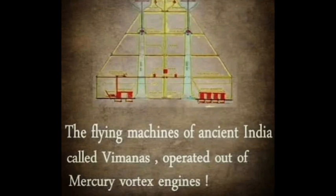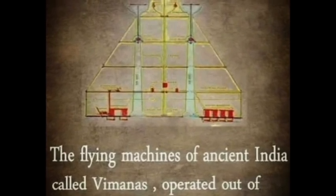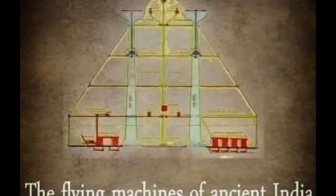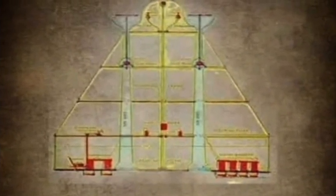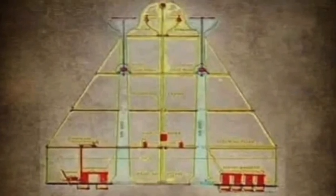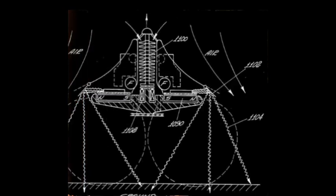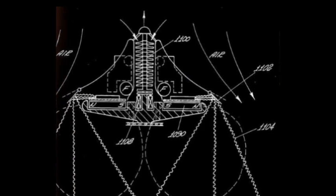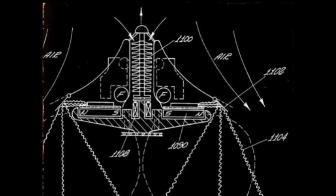Picture this: a world where gravity doesn't hold us back. Imagine floating effortlessly, defying the laws of nature. To understand how this marvel works, we must dive into the depths of the technology behind it. It all starts with something called electromagnetic propulsion. Using a complex system of highly advanced electromagnets and superconducting materials, the anti-gravity platform manipulates the electromagnetic fields.